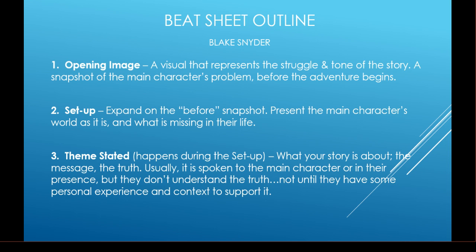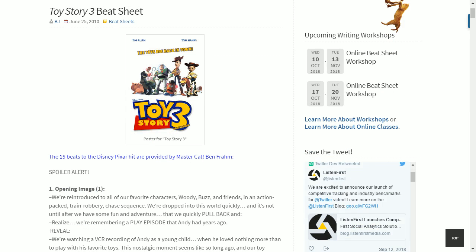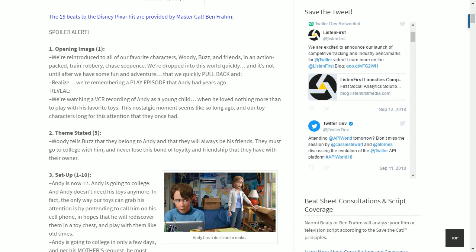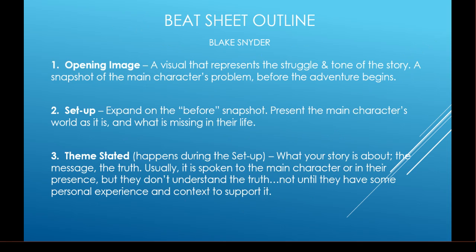That was a great way to open the story and put you in the setting of where we're at with Andy and his toys. The setup is the second beat: expand on the 'before' snapshot, present the main character's world as it is and what's missing in their life. Then the theme stated: Woody tells Buzz that they belong to Andy and will always be his friends. They must go to college with him — that's the theme of loyalty and friendship that drives the whole story.